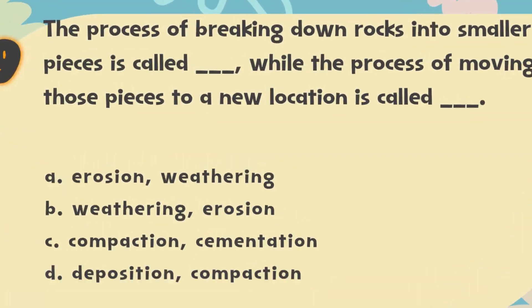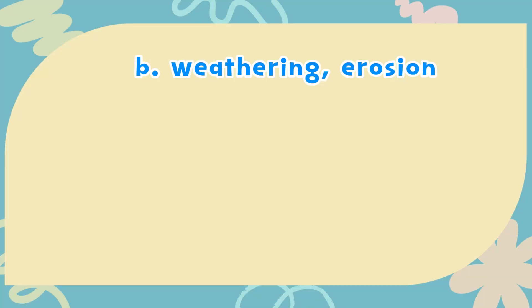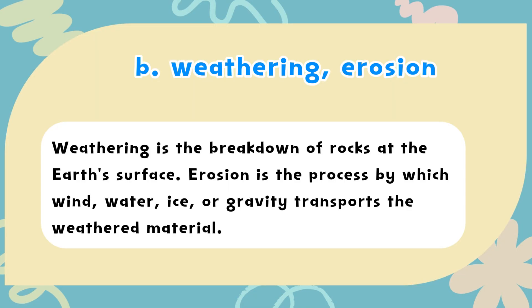The correct answer is B: Weathering, Erosion. Weathering is the breakdown of rocks at the earth's surface. Erosion is the process by which wind, water, ice, or gravity transports the weathered material.